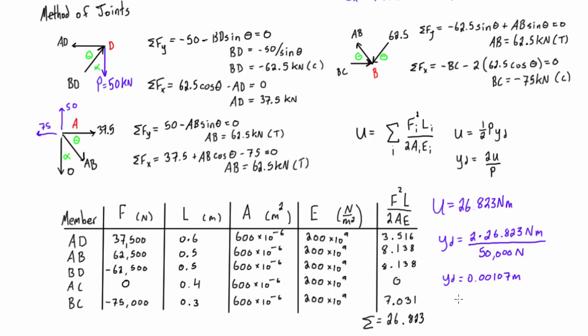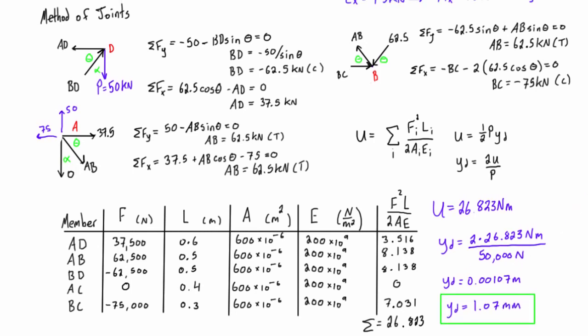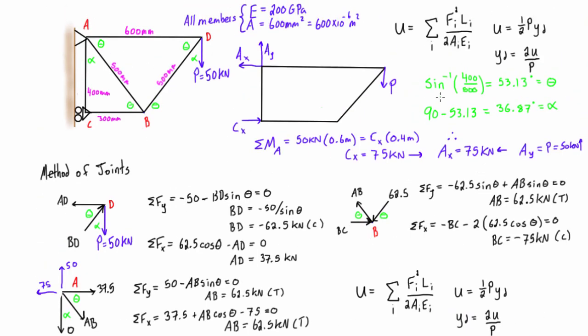Or in millimeters we have YD is equal to 1.07 millimeters. So there we go, when we apply that single point load of 50 kilonewtons to our truss, we get 1.07 millimeters of deflection, and that is purely this vertical deflection which is downward in the direction that the point load is pointing.